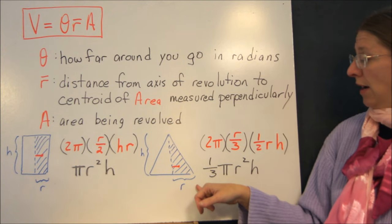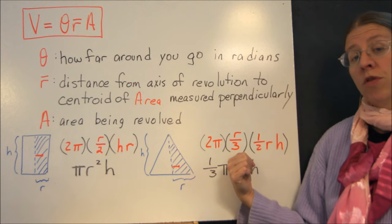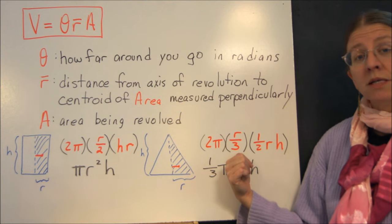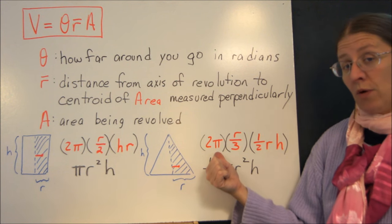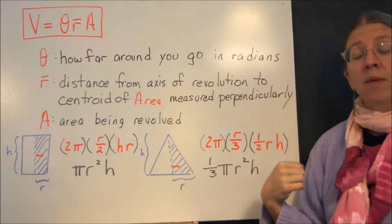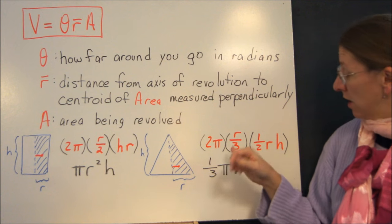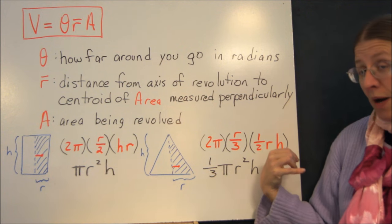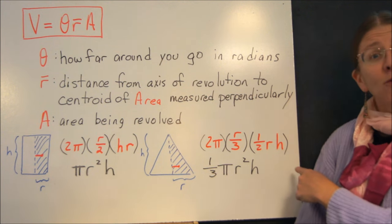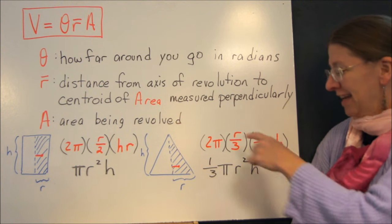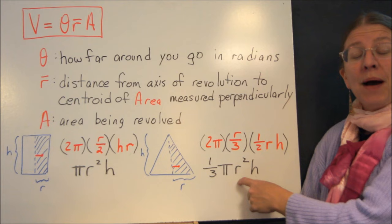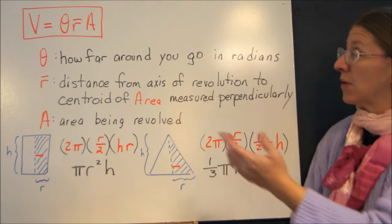When I'm looking at a triangle, I now have this R over 3. That's my perpendicular distance from the axis of revolution to the centroid of my area. Again, I'm going all the way around. And then I've got ½πR²H. The area of a triangle is ½ times base times height, which gives me this. That gives me ⅓πr²h. That's my volume. That's what I had before.